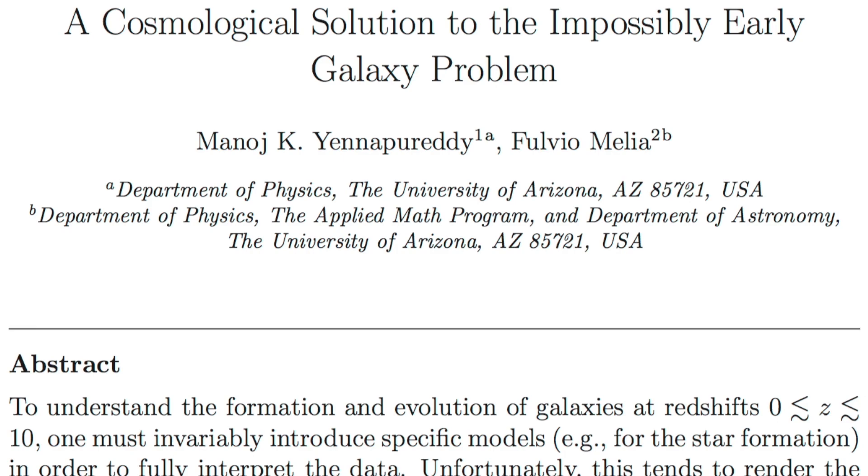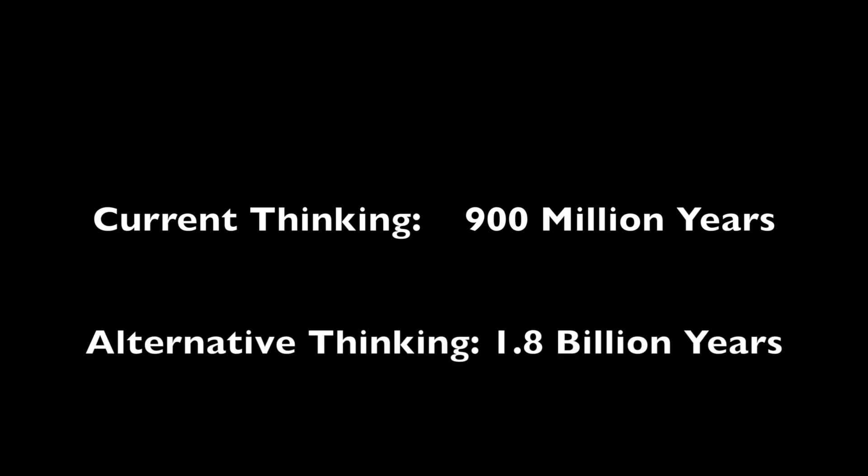It turns out that there are other indicators that suggest that the timeline in the early evolution of the universe was actually perhaps twice as long as what the standard model predicts. So instead of these objects appearing at 900 million years, they would have appeared at 1.7, 1.8 billion years. It turns out that by just doubling that timeline, it removes all the problems either with the quasars or the galaxies or with these massive dark matter halos that Charles Steinhardt is talking about.